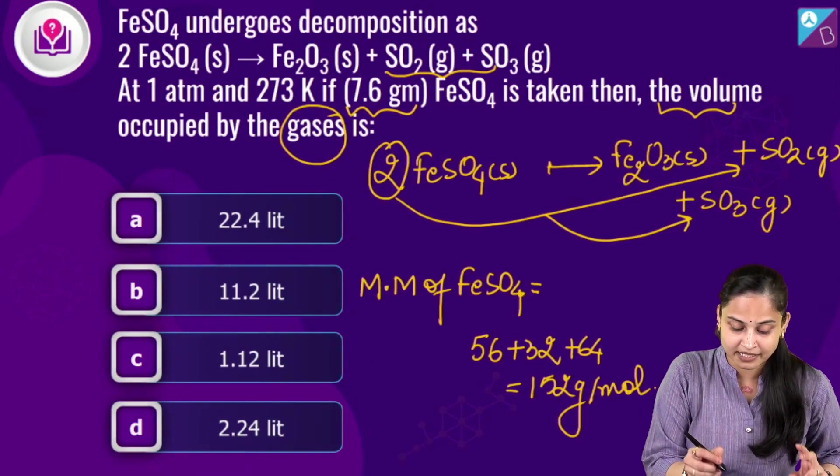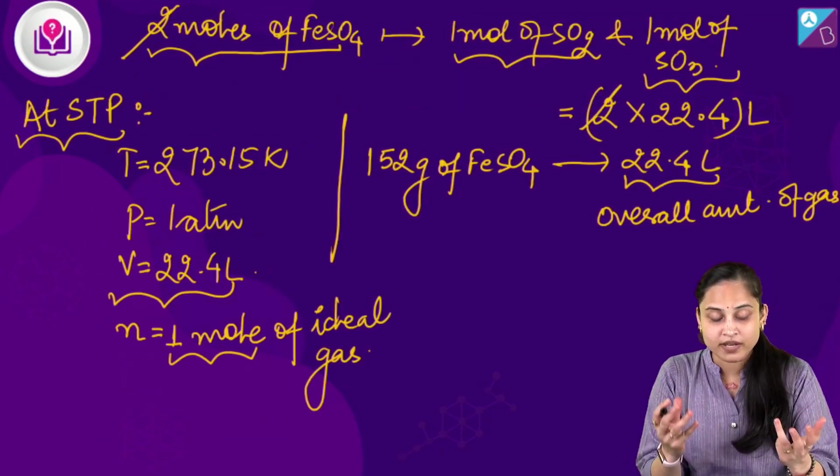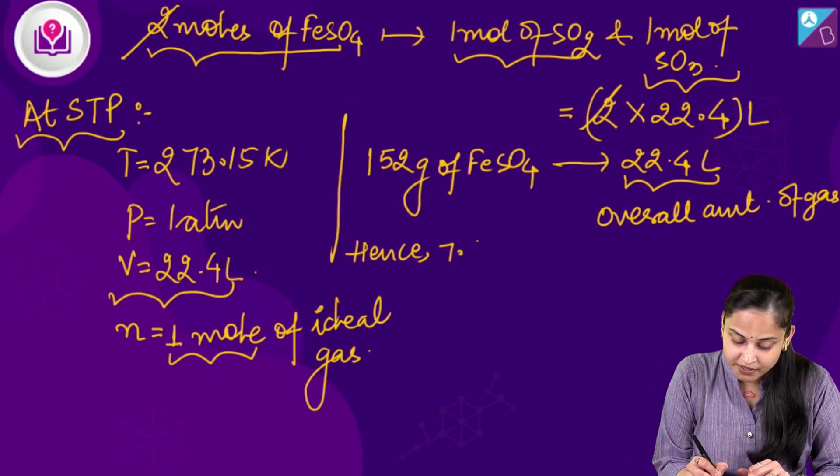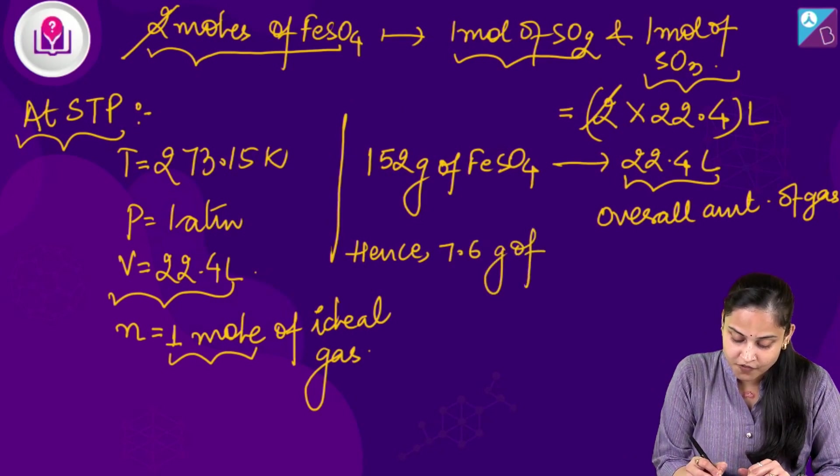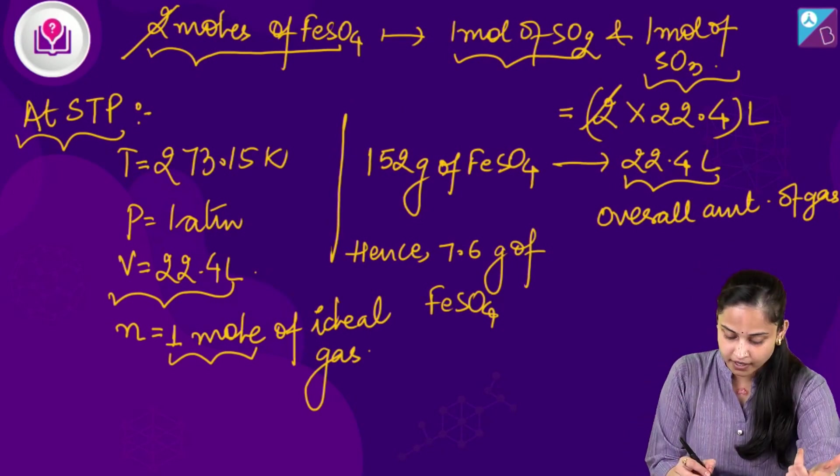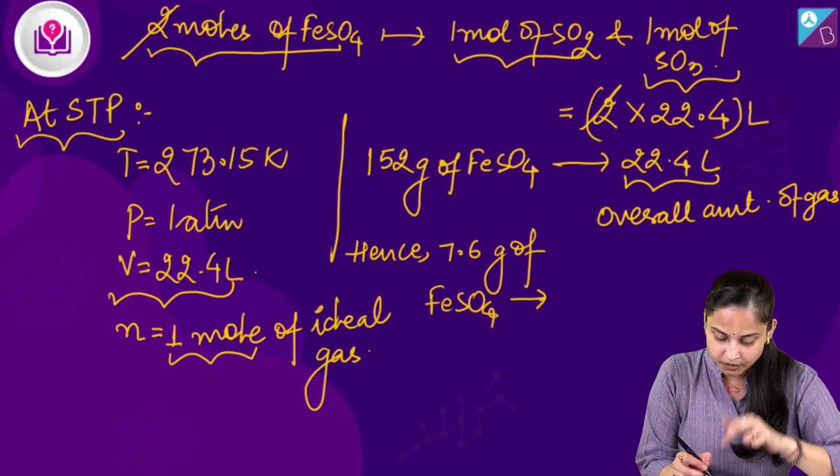Now, in the question, we have been given 7.6 grams of FeSO₄. So, we can say hence 7.6 grams of FeSO₄ will give us how much volume of the gases? It will be equals to 22.4 multiplied by 7.6 divided by 152.